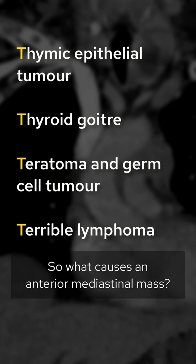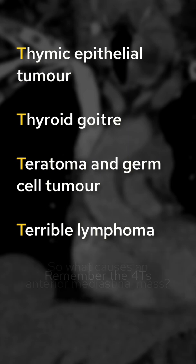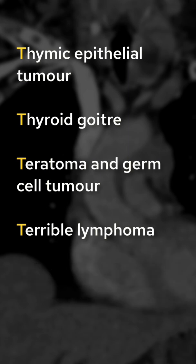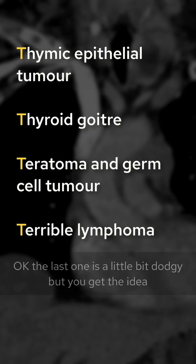So what causes an anterior mediastinal mass? Remember the four Ts: thymic epithelial tumor, thyroid goiter, teratomas, and terrible lymphoma. Okay, the last one's a little bit dodgy, but you get the idea.